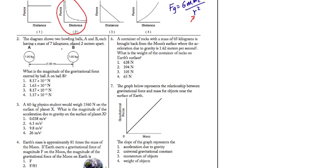Alright, number 2. We have a diagram showing two bowling balls, A and B, and they're placed 2 meters apart. And if their masses are 7 kilograms each, what's the magnitude of the gravitational force between them? Well, I'm going to do this one over here on the right.